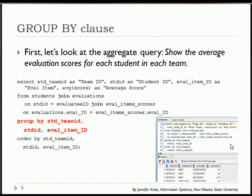So when we run that query, this would be our result. For example, we're seeing within team ID a particular student AKRY, and that student has three eval items: contribute, interpersonal, and reliable, with scores of 90, 90, and 100 respectively.